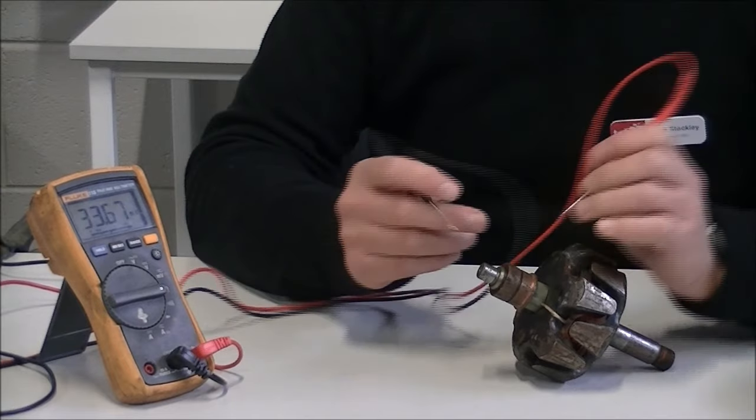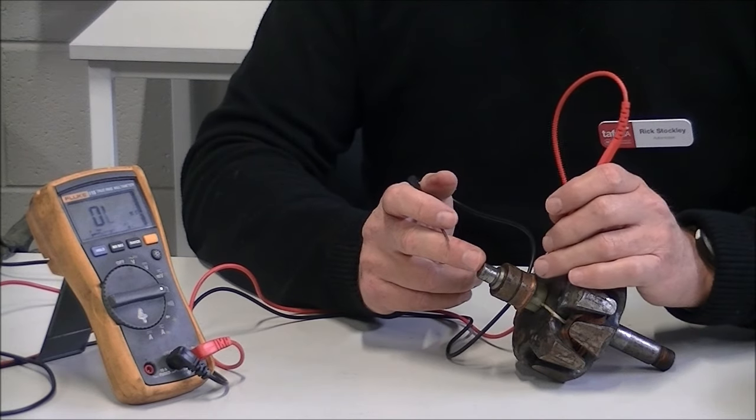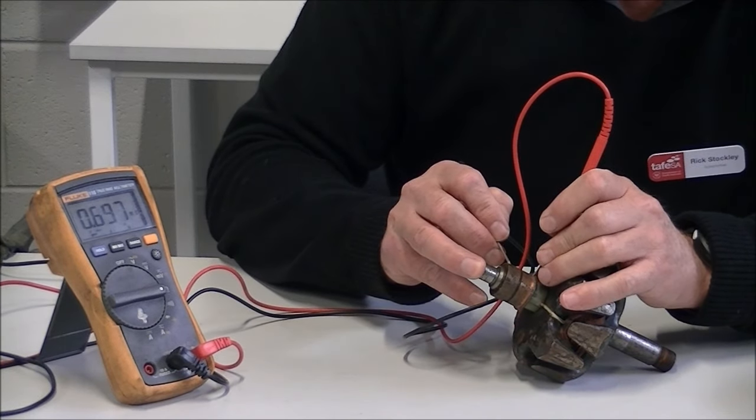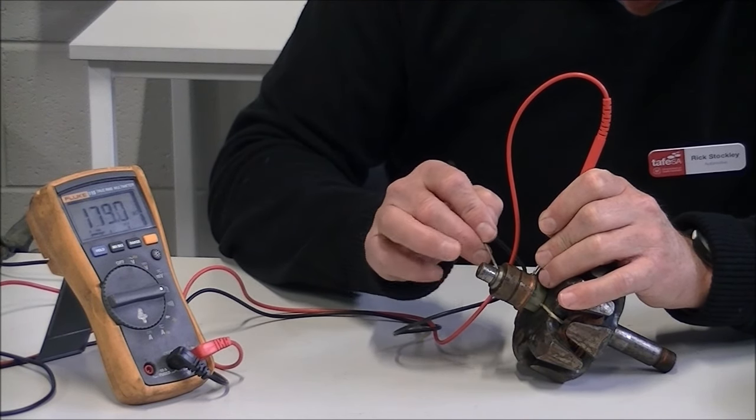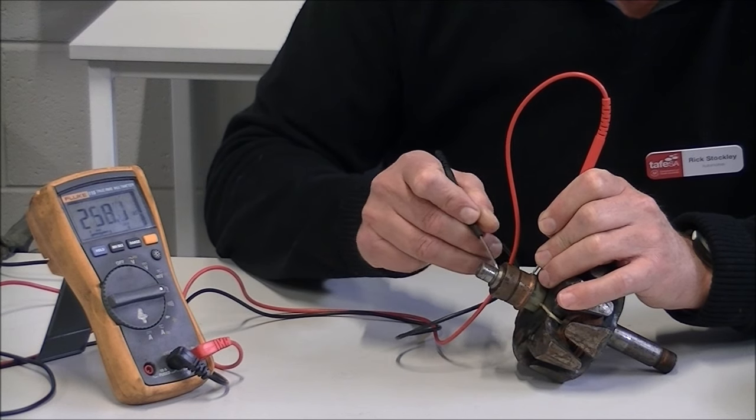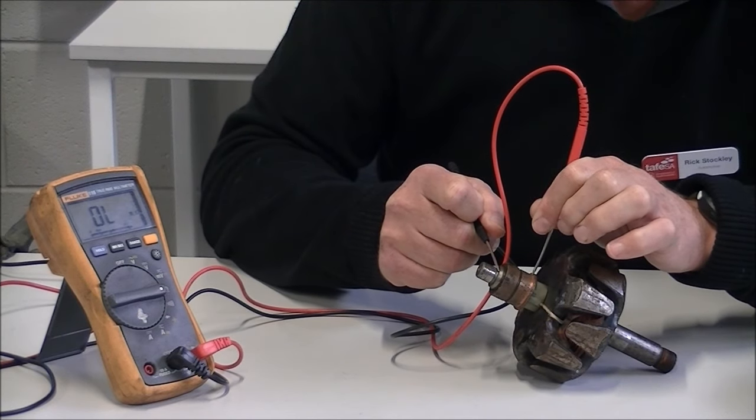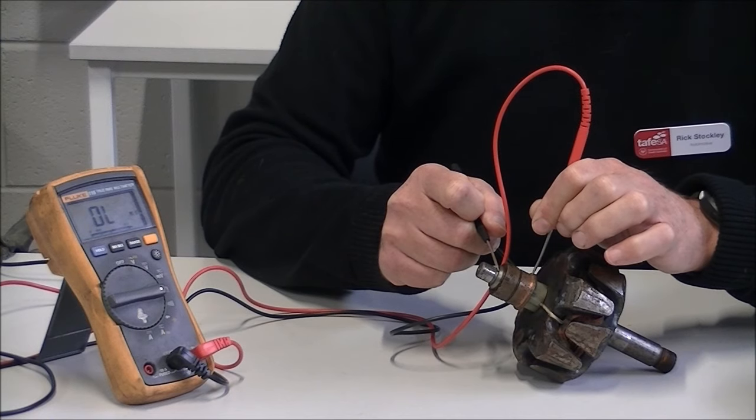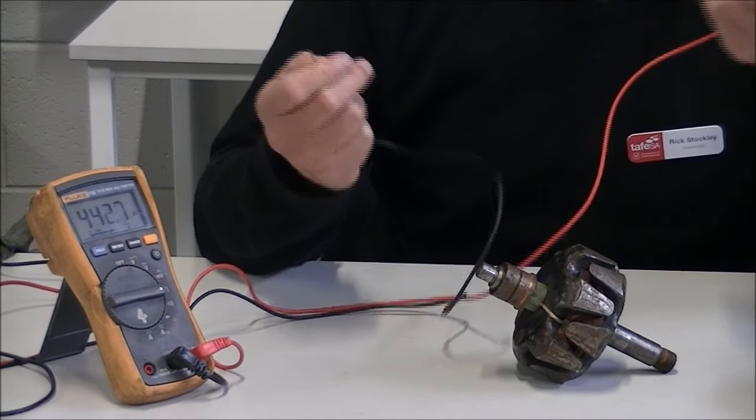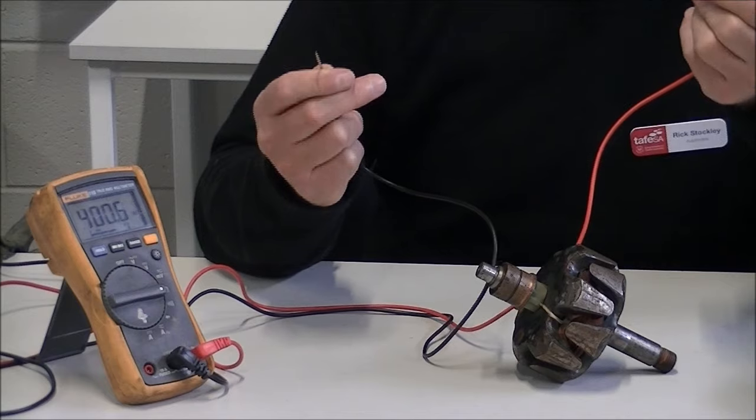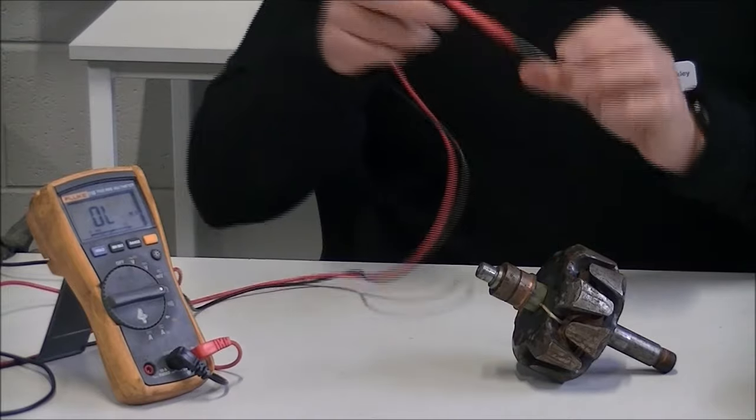We'll also check that the coil is not grounded out or earthed out to the frame or shaft. To do that, we can simply make sure we have a connection on the slip ring and check that against the metal surface. And if I can get my fingers out of the way, you'll see that it's open circuit. Now that was reading a little bit of a number there for a while, simply through the resistance of my body. So when you're using an ohmmeter, be aware that if you're holding the prongs with your fingers, you will create a resistance through your body.